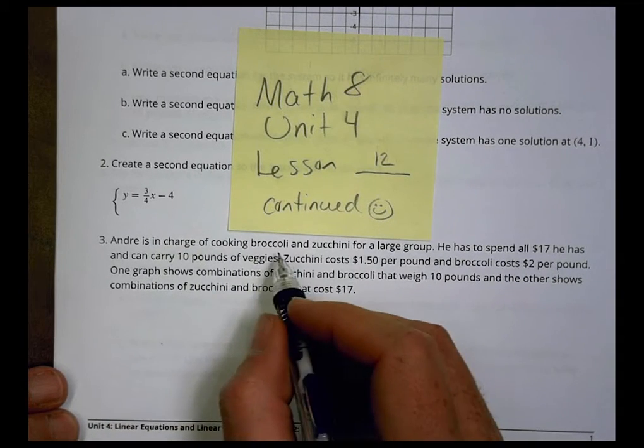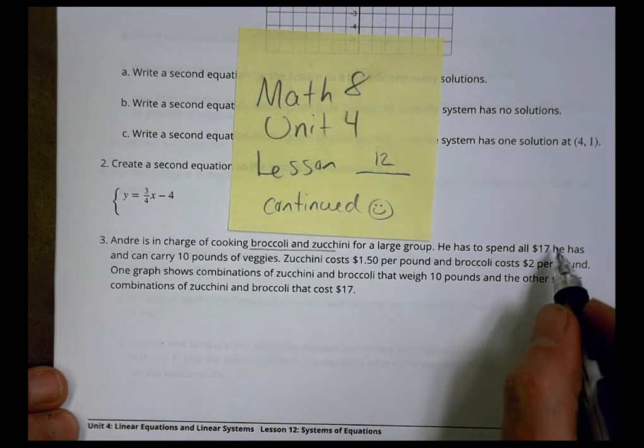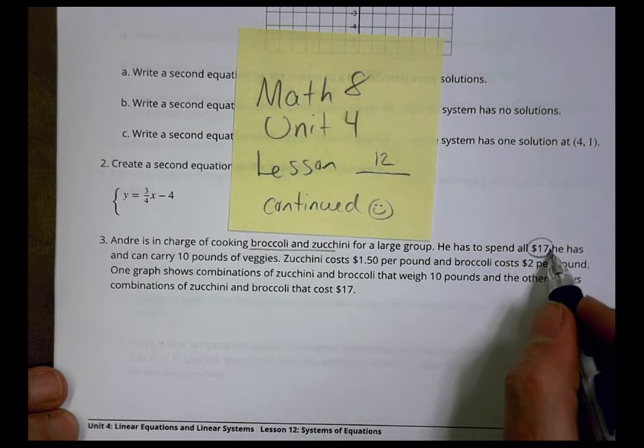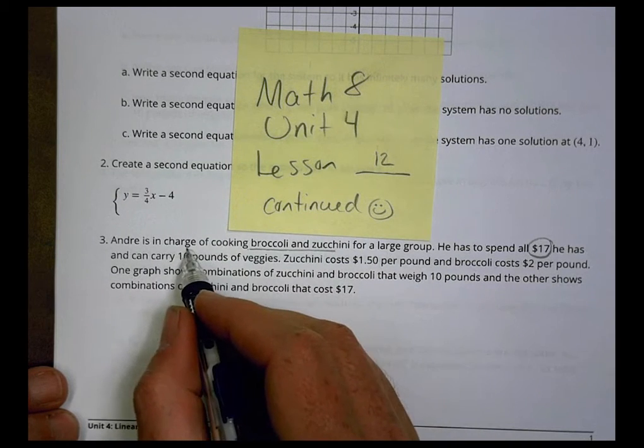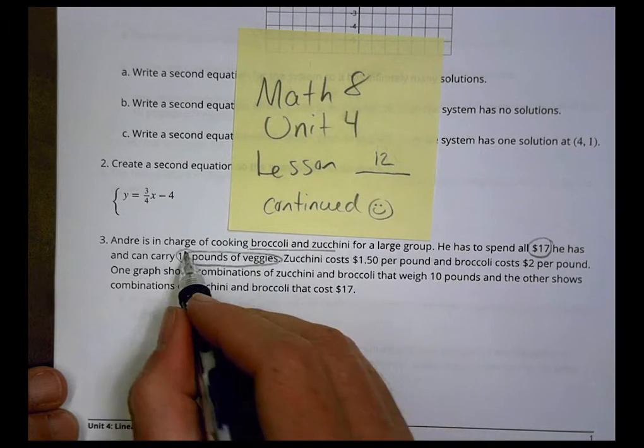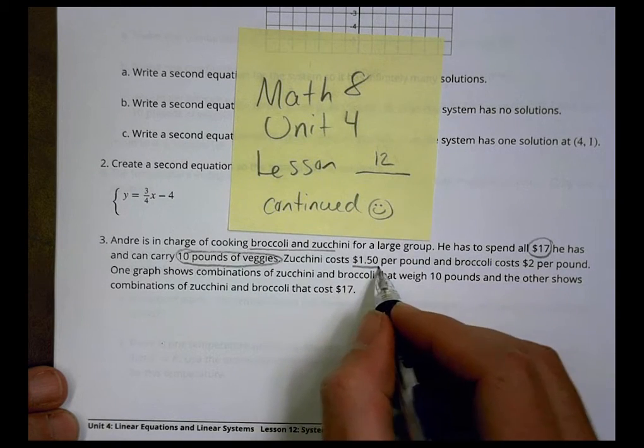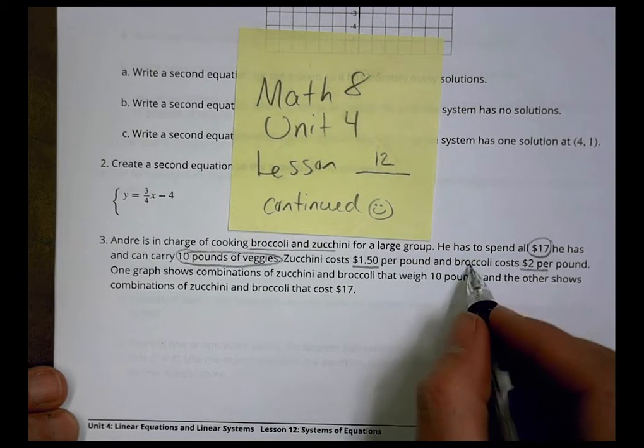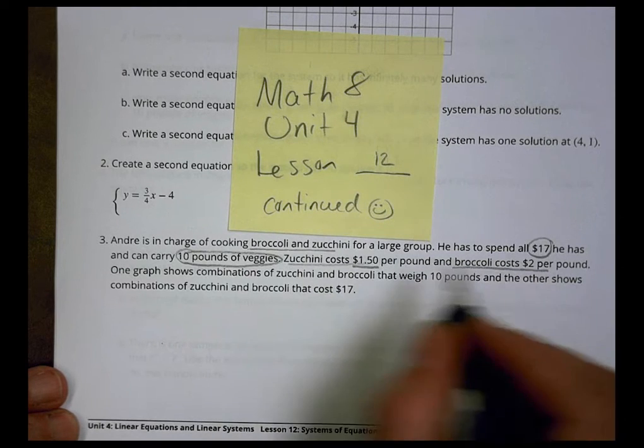So here we go, wrapping up starting with number three, which is where our video stopped before. It says Andre is in charge of cooking broccoli and zucchini for a large group. He has to spend all $17 he has and carry 10 pounds of veggies. Zucchini costs $1.50 per pound, broccoli costs $2 per pound.